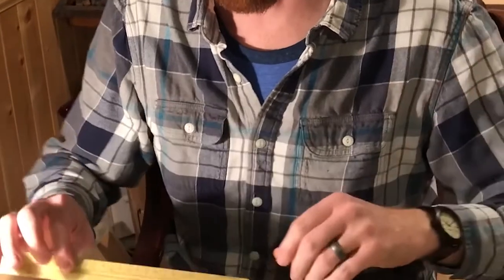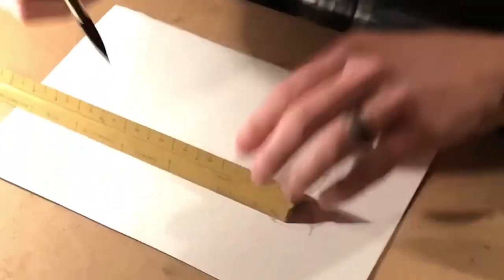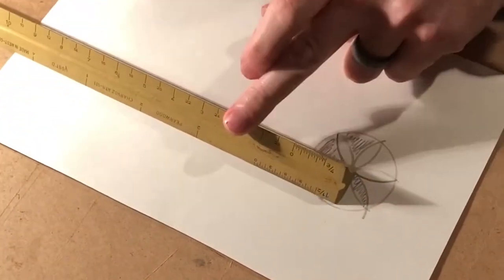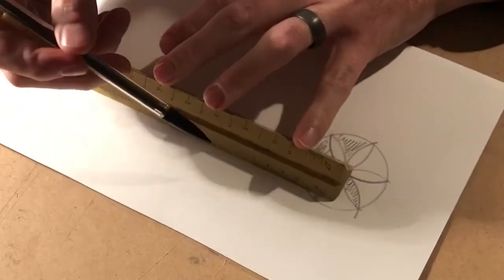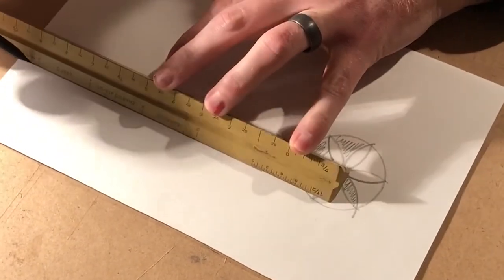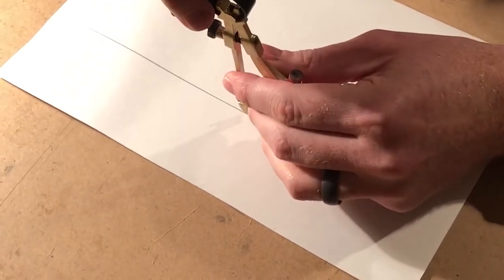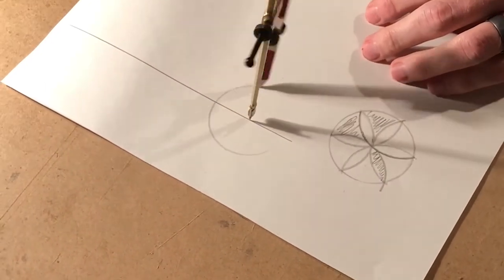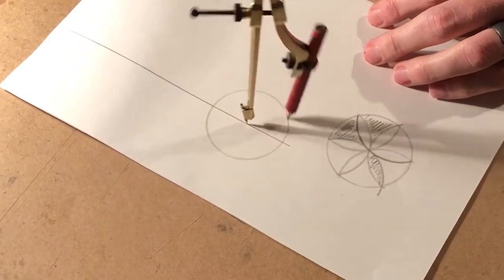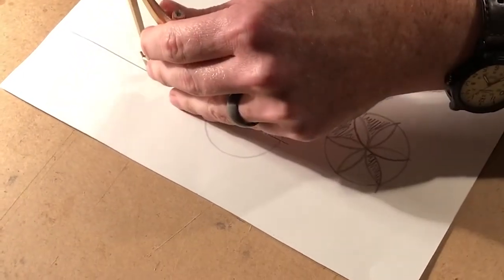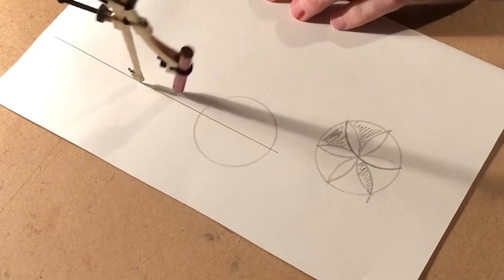For a four-point rosette you need a straight edge or ruler and a pencil. Then somewhere on that line make your circle. I'm gonna make two circles to show you two variations.